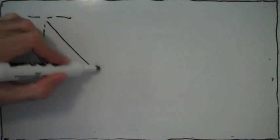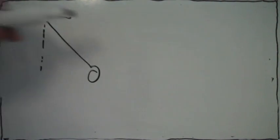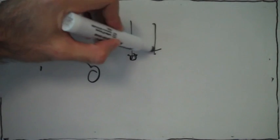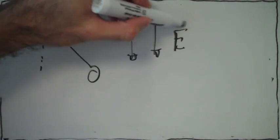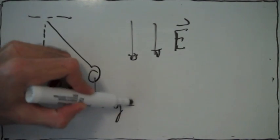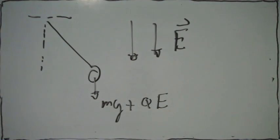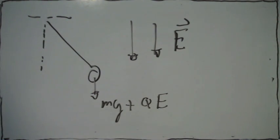Let's look at this mass. When we displace it at some angle from the vertical, there's an electric field everywhere. The electric field is pointing downward. So the total force going down is the gravitational force plus the electric force. That's the total force pulling the mass down.